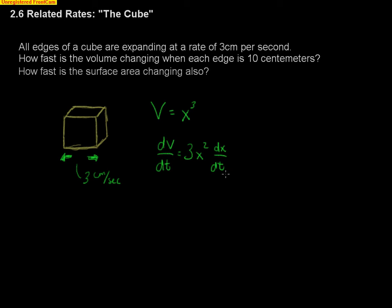which means we hopefully should have all the other information. Well, how fast is the volume changing when each edge is 10 centimeters? So if we've got a 10 centimeter edge right here, we're going to wind up with dV/dt equaling 3, 10 squared. And then dx/dt is the rate the sides are increasing, and that was 3 also.